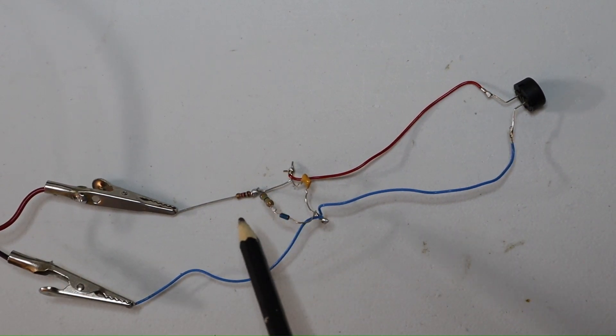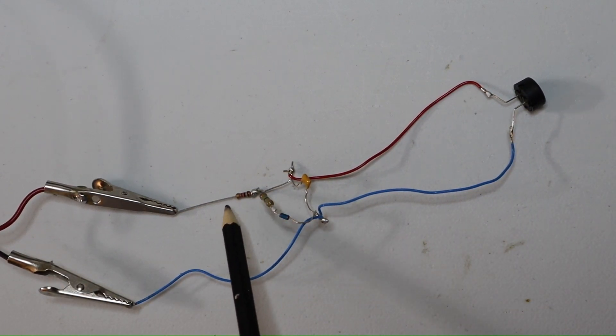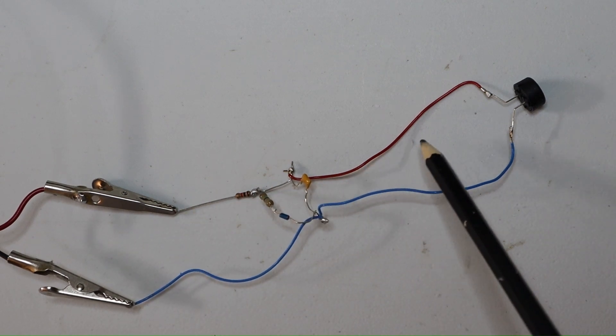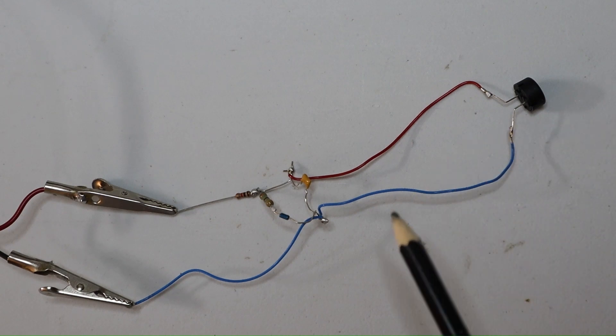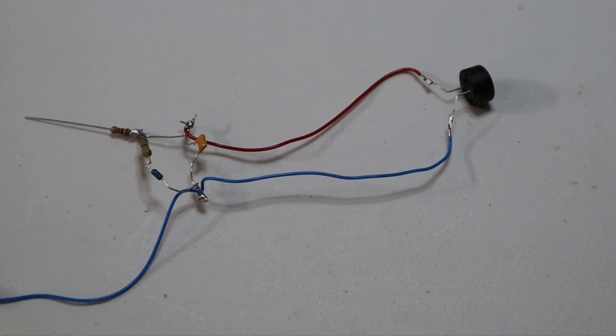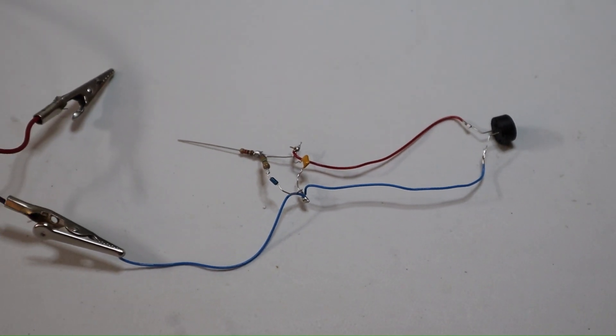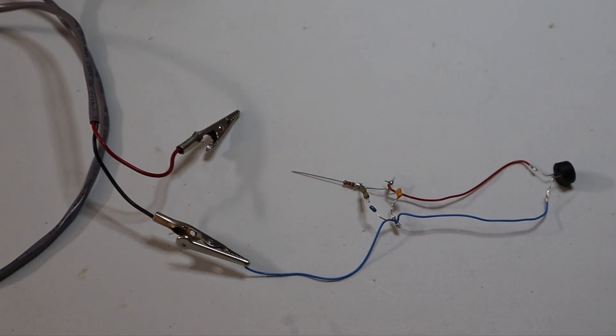This shows the parts: the 1 kilo resistor, the capacitor, and the PSO speaker. So now the circuit will be connected to the power supply. I used a 0 to 40 volt power supply with this circuit.